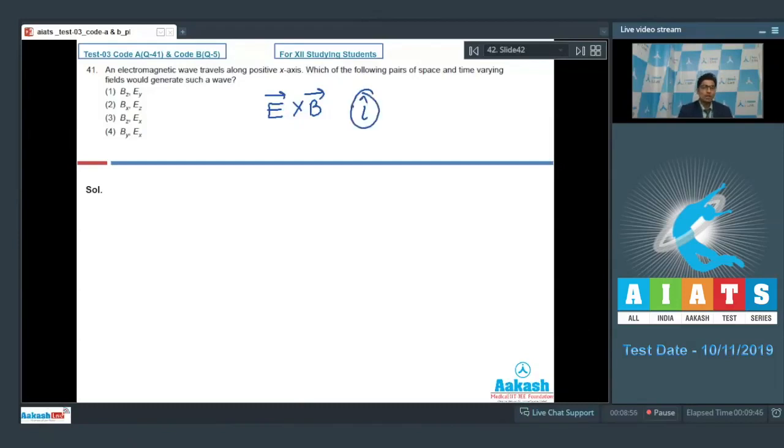We can see in option number 1 that the magnetic field is along z-direction and electric field is along y-direction. Therefore, Ey × Bz will be along the direction of j-cap × k-cap, which has a direction of i-cap. And hence option number 1 is our correct answer.